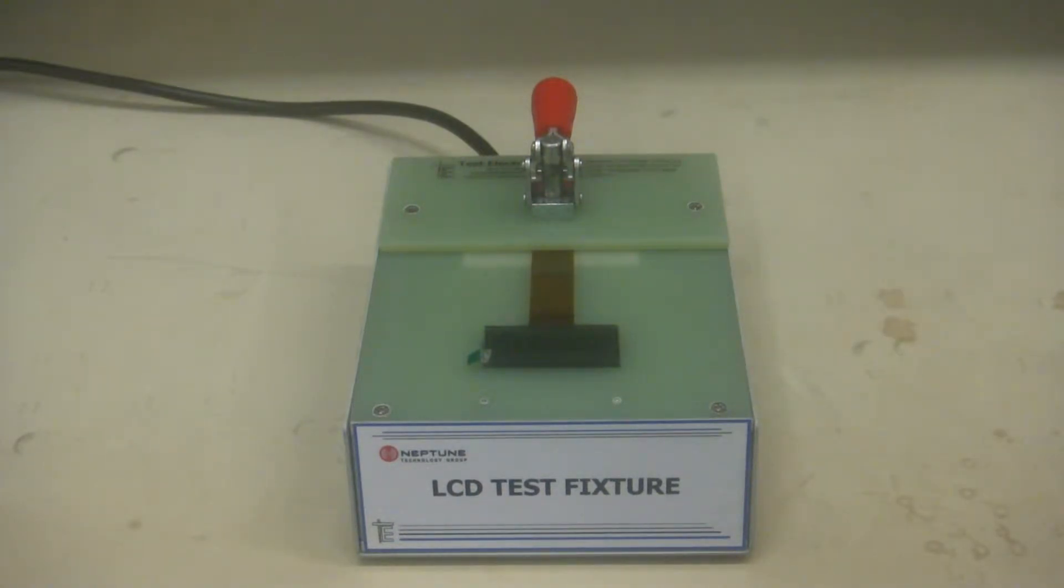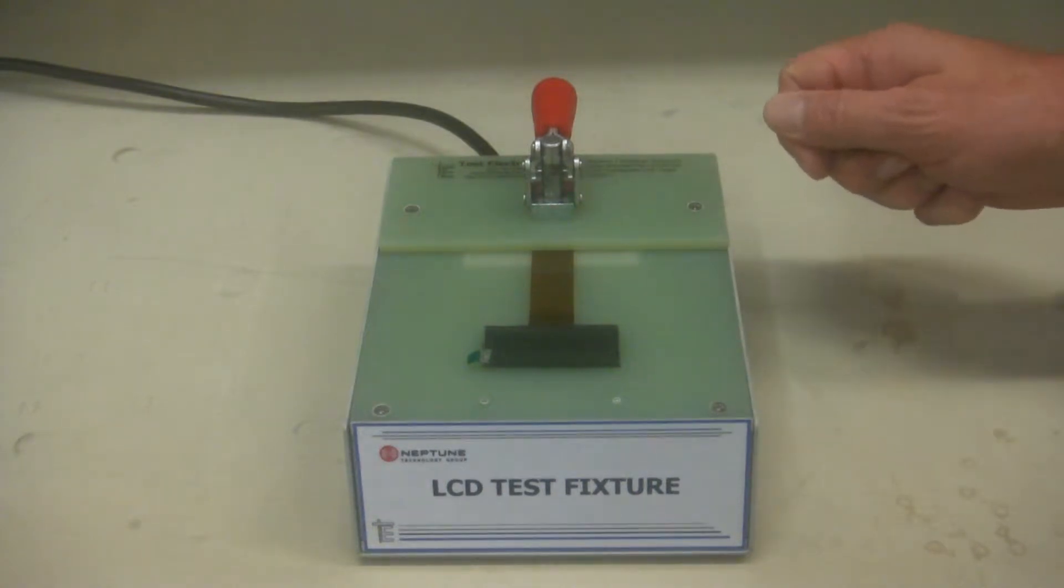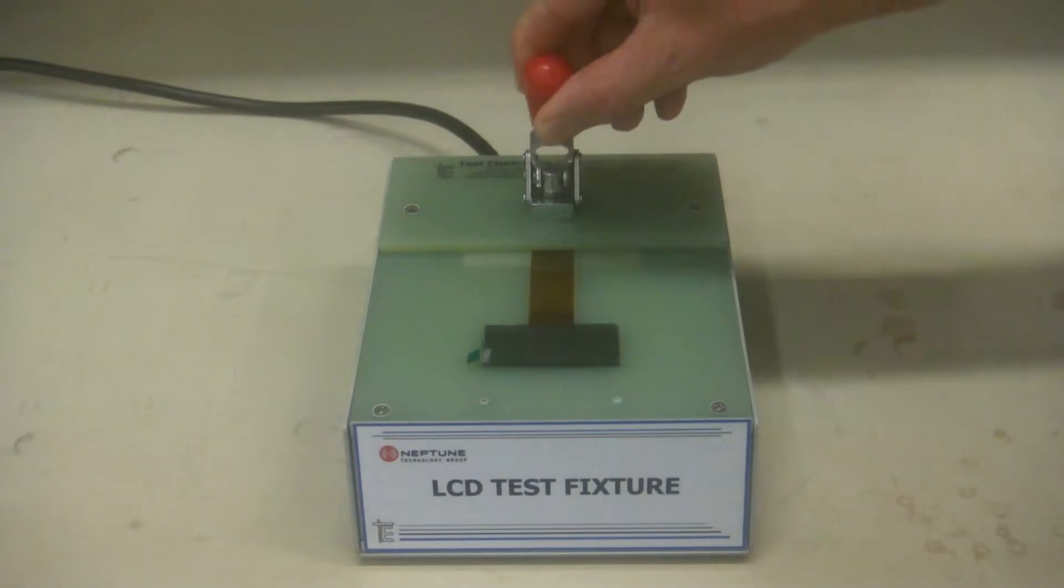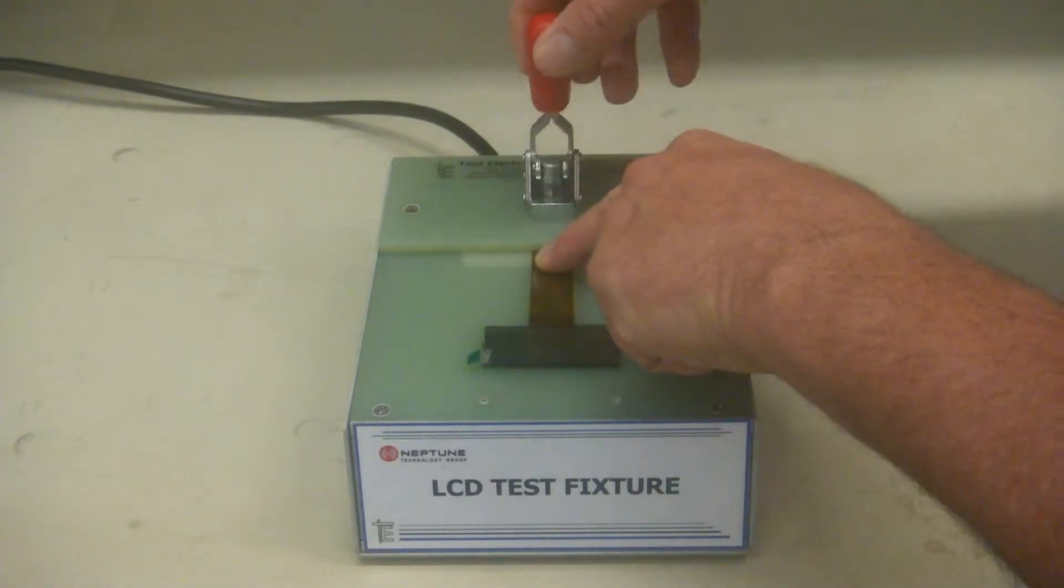Now this is similar to our Prober style test fixture with the lever on the side, but at about one-fifth the cost because it uses this low-cost Distaco clamp, $10 Distaco clamp.